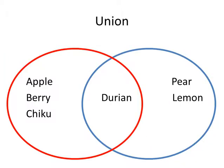The union operation can also be represented in the Venn diagram. For this Venn diagram, the union operation is basically a combination of all the items in the two sets represented in the two circles — the tables' values.